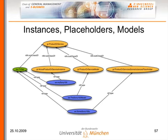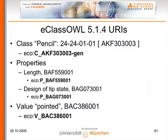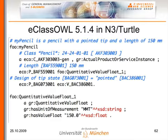Actual product or service instances and toy TV set. Then you say it has a length of 150 millimeters. So you say the property is equal to p_ba... — the id for length — foo:QuantitativeValueFloat. We are pointing to a quantitative value float that represents that length. It's an instance of gr:QuantitativeValueFloat, has unit of measurement millimeters string, and has value float 150.